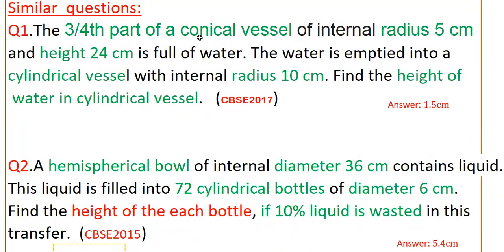Here, three-fourths of the volume of the conical vessel is equal to the volume of the cylindrical vessel — here the height is up to the water. The radius is known and the height you have to find. So three-fourths of the cone's volume is set equal to the volume of the cylinder, where the height in the cylinder is the height of the water.